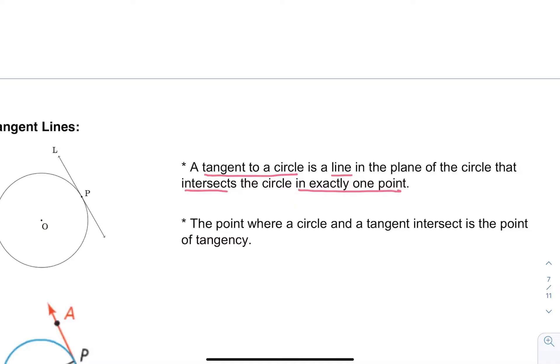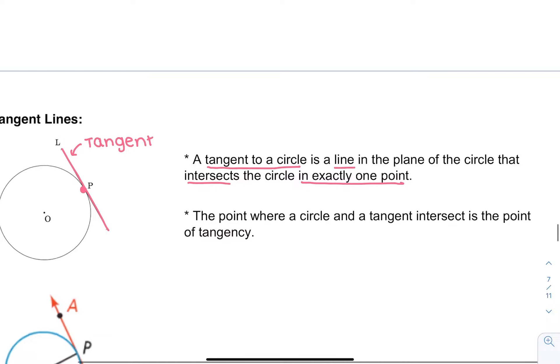That intersects a circle in exactly one point. Over here, this line L is a tangent line. It's tangent because it intersects the circle at only one point P. Some line like this wouldn't be tangent because it intersects twice - it has to only intersect once.